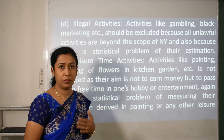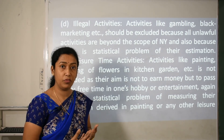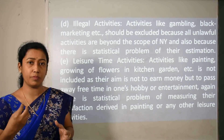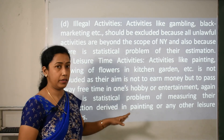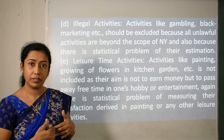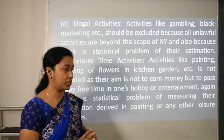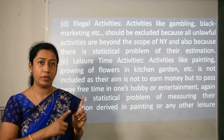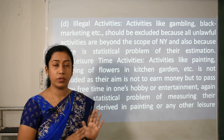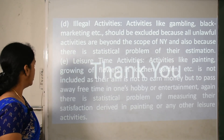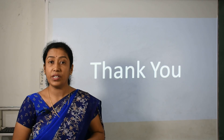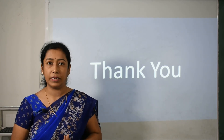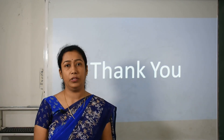Free time hobbies and entertainment activities face a statistical problem of measurement, and the satisfaction derived from them — such as from painting — is inner satisfaction rather than income. So leisure time activities and illegal activities are not included when calculating GNP. With this, we have finished all the terms and concepts of the chapter. In the next video, we will solve the numerical problems from this chapter. Thank you.